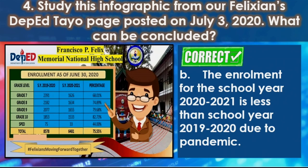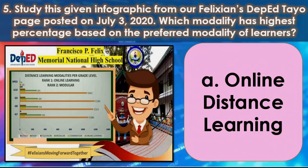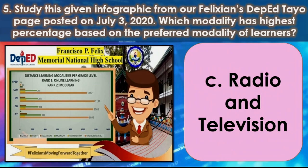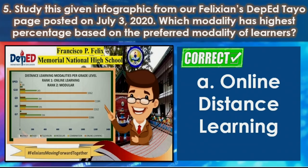For the last number, study the given infographic again from our Felician Stepad Tayo page posted on July 3, 2020. Which modality has the highest percentage based on the preferred modality of learners? A. Online distance learning. B. Modular distance learning. C. Radio and television. D. All of the above. The correct answer is letter A — online distance learning.